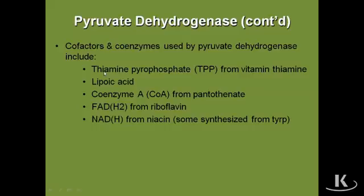The five coenzymes and cofactors are: thiamine pyrophosphate, which comes from the vitamin thiamine; lipoic acid, which your body just makes; coenzyme A, coming from pantothenic acid; FAD, coming from riboflavin; and NAD, coming from niacin.